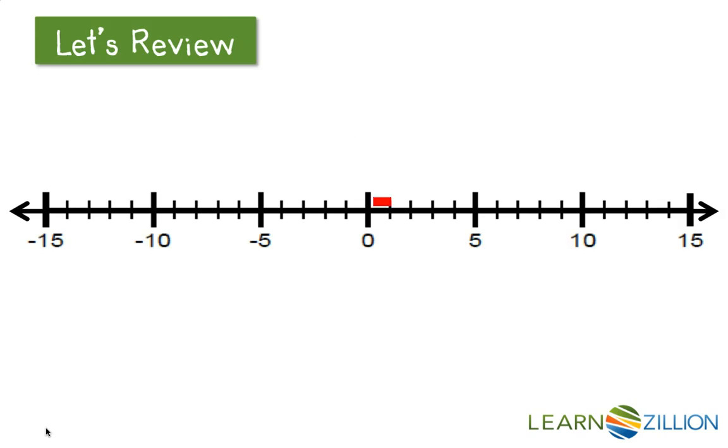Let's review. On a number line, if I wanted to locate positive 5, I would go 5 units to the right of 0.